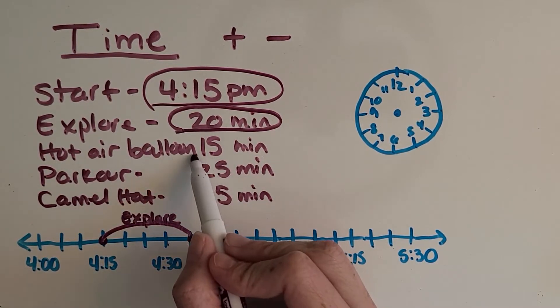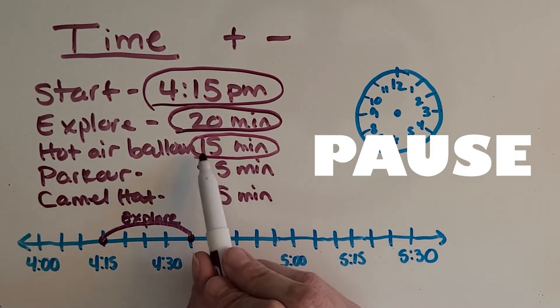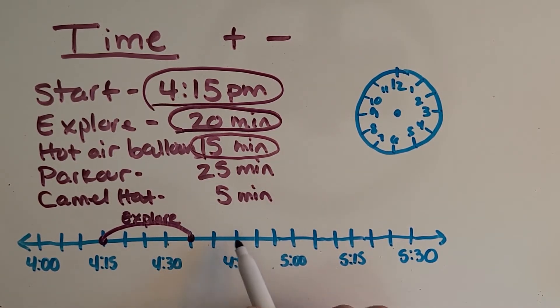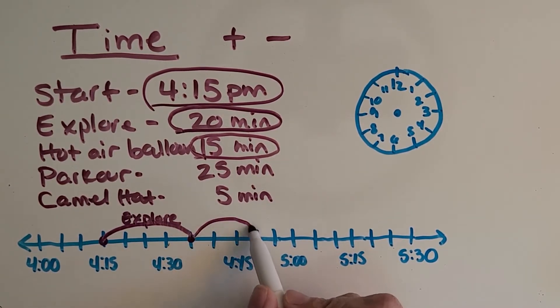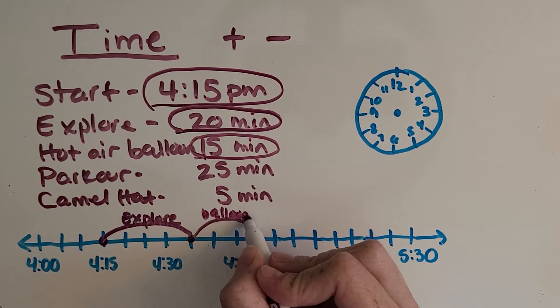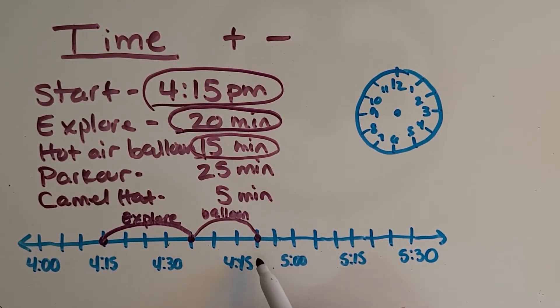Okay, now let's do the hot air balloon. Would you pause the video again and jump forward 15 minutes? Okay, let's check your work. 5, 10, 15. Here's the hot air balloon. Okay, and what time are we at now? It's just one mark ahead of 4:45. Okay, 4:50.